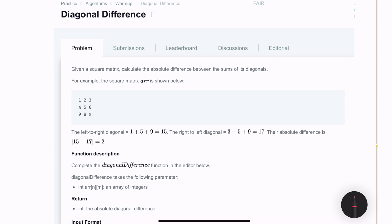Hello everyone. In this video, we will be solving a HackerRank easy problem called diagonal difference. The problem statement is we are given a square matrix. We need to calculate the absolute difference between the sums of its diagonals.